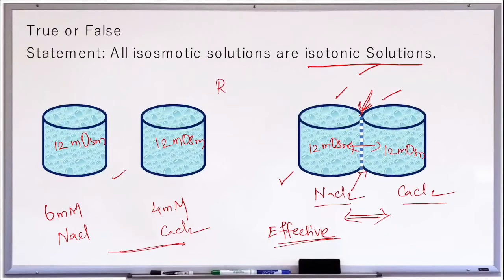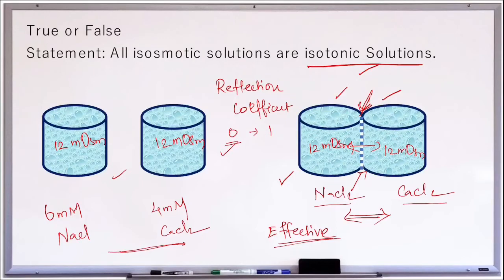This can be defined by the reflection coefficient (σ), a number from 0 to 1 indicating whether a molecule is permeable or not. A value of 0 means the molecule is completely permeable, similar to water, whereas 1 means complete impermeability. A molecule with σ between 0 and 1 will have some osmotic pressure, but if σ = 0, the molecule creates no effective osmotic pressure.